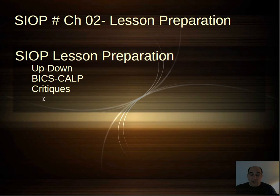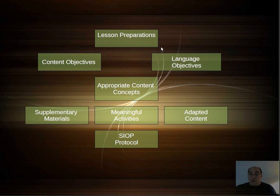Let's start off here. This is the beginning — the little chart at the beginning — and they're talking about lesson preparations, and that's what this chapter is all about. The primary components they're going to be talking about are the objectives: the content objectives and the language objectives. They stress the need that we should let our students know what these objectives are.